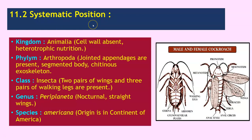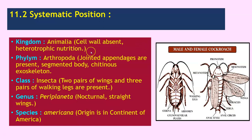Now we will see the systemic position — that is, the classification of cockroach. Kingdom: Animalia — cell wall is absent and heterotrophic mode of nutrition is present. Phylum: Arthropoda — they have jointed appendages, a segmented body, and a cutaneous exoskeleton.